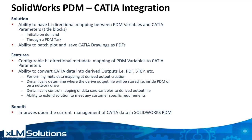I was able to demonstrate configurable and bidirectional metadata mapping between PDM variables and CATIA parameters, and the ability to convert CATIA data into a derived output — in this case a PDF, but we could also use other derived outputs like STEP files, IGES, DWFs, etc. The task can also perform metadata mappings to the derived output. We can dynamically determine where the derived output file is stored — inside PDM in the same folder as the CATIA drawing, or outside PDM on a network drive or different folder structure as desired.